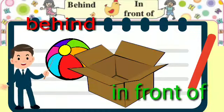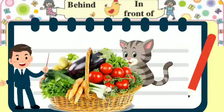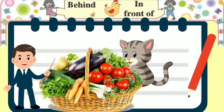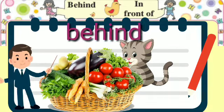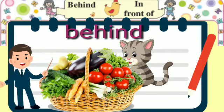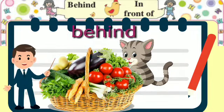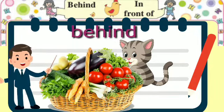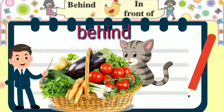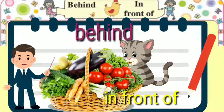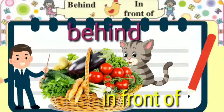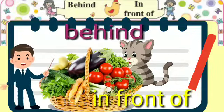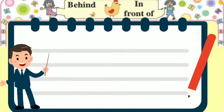Where is the box? It is in front of the ball. The box is in front of the ball. Let's see another example — where is the dog? It is behind the vegetable basket.